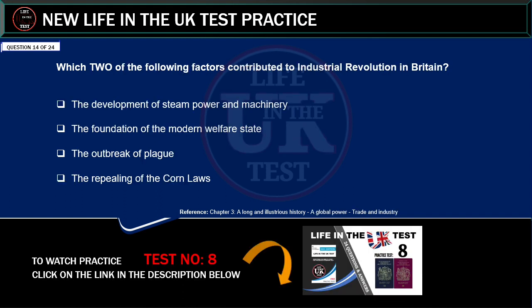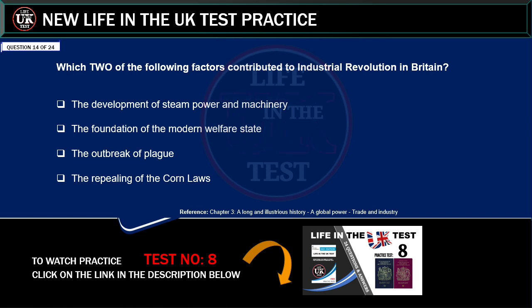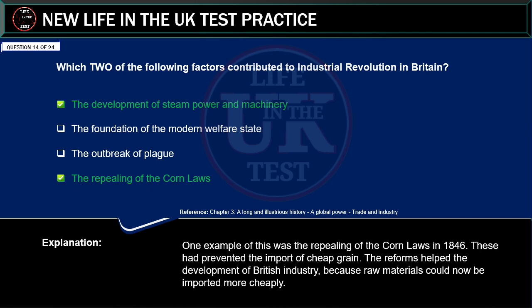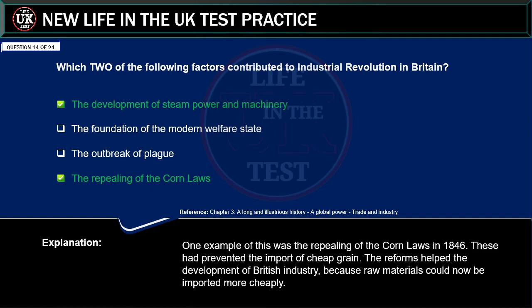Which two of the following factors contributed to the Industrial Revolution in Britain? The development of steam power and machinery. The foundation of the modern welfare state. The outbreak of plague. The repealing of the Corn Laws. Correct answer: the repealing of the Corn Laws, and the development of steam power and machinery. Explanation: one example was the repealing of the Corn Laws in 1846, which had prevented the import of cheap grain. The reforms helped the development of British industry because raw materials could now be imported more cheaply.